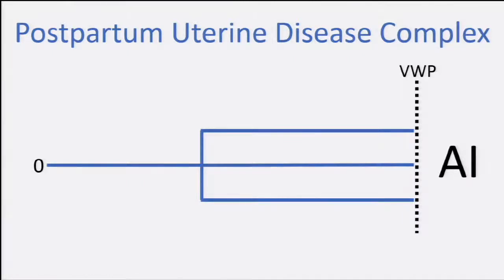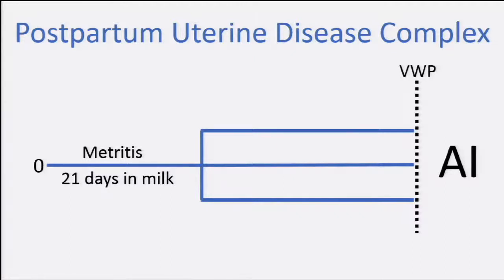When talking about postpartum uterine disease in chronological order, first we have to define what metritis is. Metritis is the red-brown discharge coming from the uterus within 21 days in milk, but always importantly with systemic signs — fever or decreased feed intake. So it's normal to have discharge, but it's only defined as metritis when you have systemic signs.